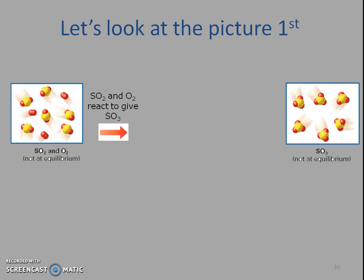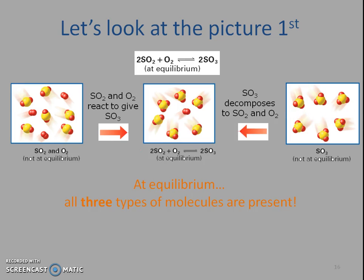Not at equilibrium yet, right? So here we have our reactants. We form some products. Now these products are going to have enough energy, and there's going to be enough of them to start decomposing into those reactants again. So now we're at equilibrium because all three molecules are present. The sulfur dioxide, the oxygen, and the sulfur trioxide. And it's to the correct amounts of coefficients, your correct mole ratio.